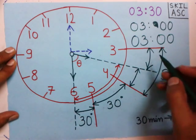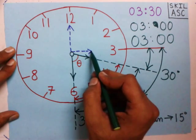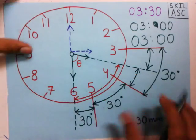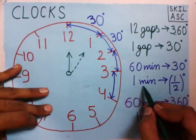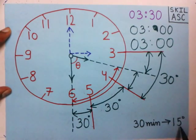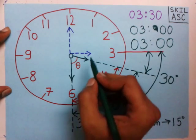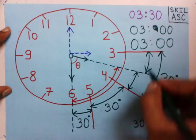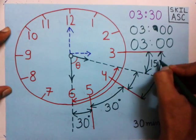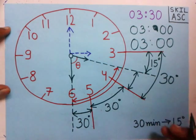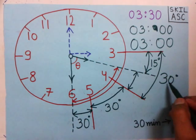Now we have to find this angle. Notice this hour hand is moving from this position to this position after 30 minutes. We know in 1 minute the hour hand covers half a degree. So while moving from this position to this position in 30 minutes, the angle covered is 15 degrees. We then subtract 15 degrees from 30, giving us the third angle.